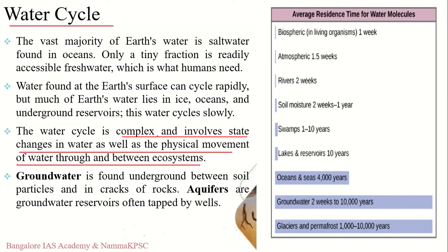Water found at the earth's surface can cycle rapidly, but water beneath the surface and stored in the form of ice cycles very slowly. You can look at the diagram on your right-hand side — water which forms part of the surface water on earth is cycled very rapidly, whereas water found beneath the surface cycles very slowly.